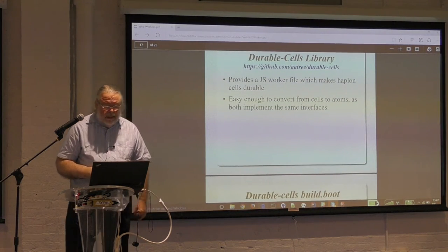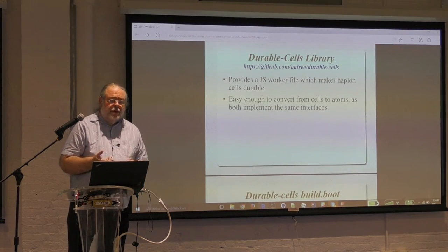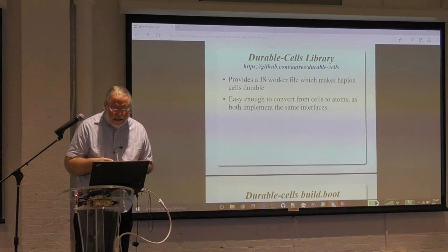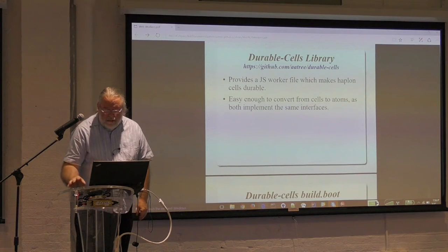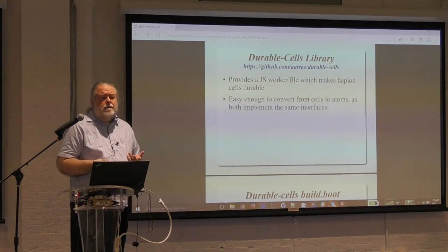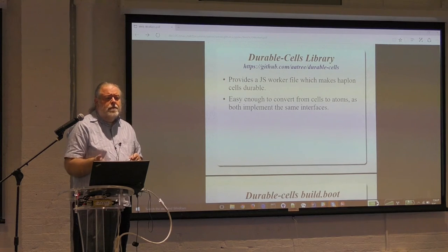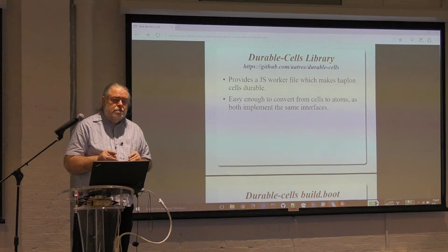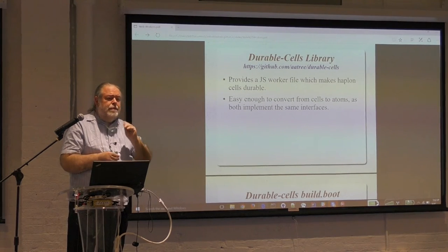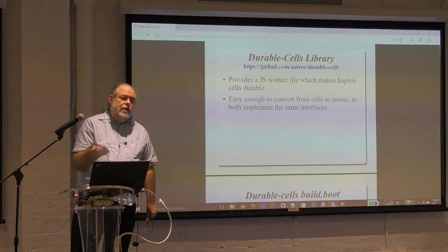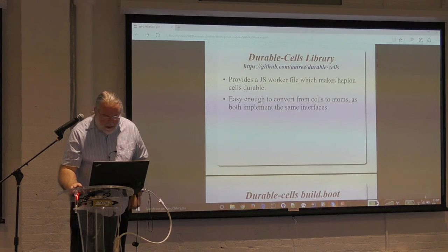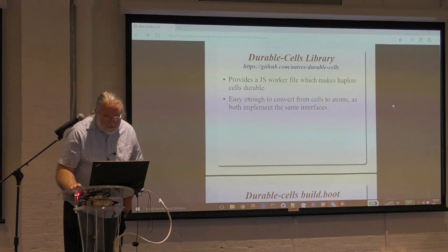The durable cells library provides durable Hoplon cells. It uses Hoplon cells all over the place, but they use the same interfaces as atoms. You can easily convert this library over to use atoms instead of cells, but then you need to work out a different API with your application - maybe having a ready cell isn't enough, and you might want to get a message instead so that you can do something when initialization is complete.